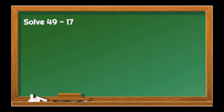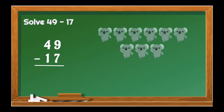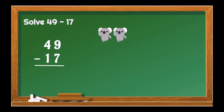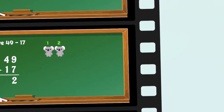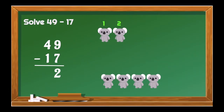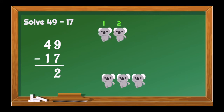For our second example, we need to subtract 17 from 49. Again, let's start with the 1's place. From 9, we need to take away 7 — that gives us 2. Next, we need to take away 1 from 4 — that gives us 3. So, 49 minus 17 is equal to 32. Good job!